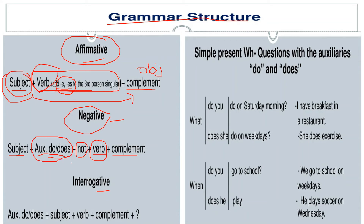We know that with 'do' or 'does' as auxiliary verbs, we do not use -e, -es, or -ies with the verbs. Next, in the interrogative sentence we will use the auxiliary verb first — 'do' or 'does' — then the subject, then the verb and the object, that means complement, and the interrogation sign.